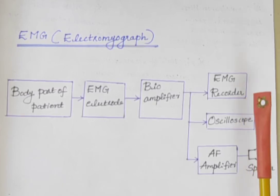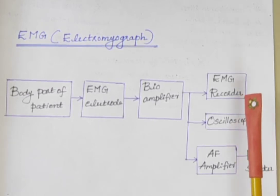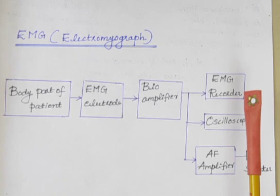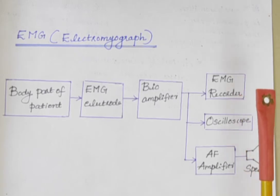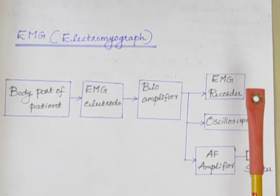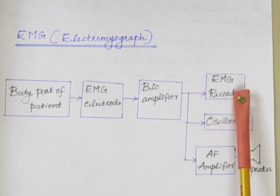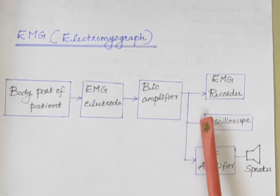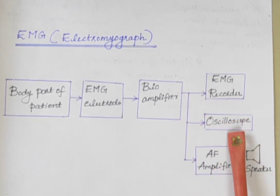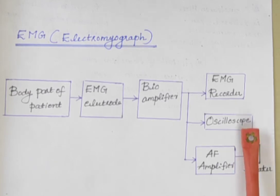The function of EMG recorder is to record the EMG signal. For this, a light sensitive paper is moved over the recording cathode ray tube. Or, we can give this to an oscilloscope. It is used to visualize the EMG. The EMG can also be stored by using digital storage oscilloscope for further analysis.